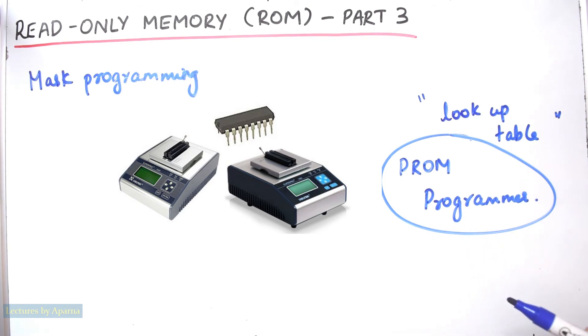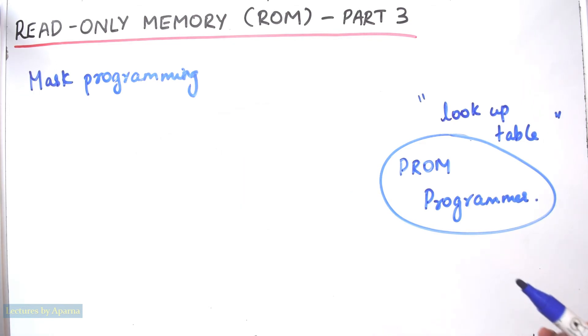Using this programming kit, the data will be burned into the IC by the programmer himself. So they are called programmable ROMs. Because the programmer himself can do it, he need not give it to the manufacturer for programming. But one thing to note is that this programming can be done only once. Once it is done, you cannot change it and it is permanent. So this is a programmable ROM.